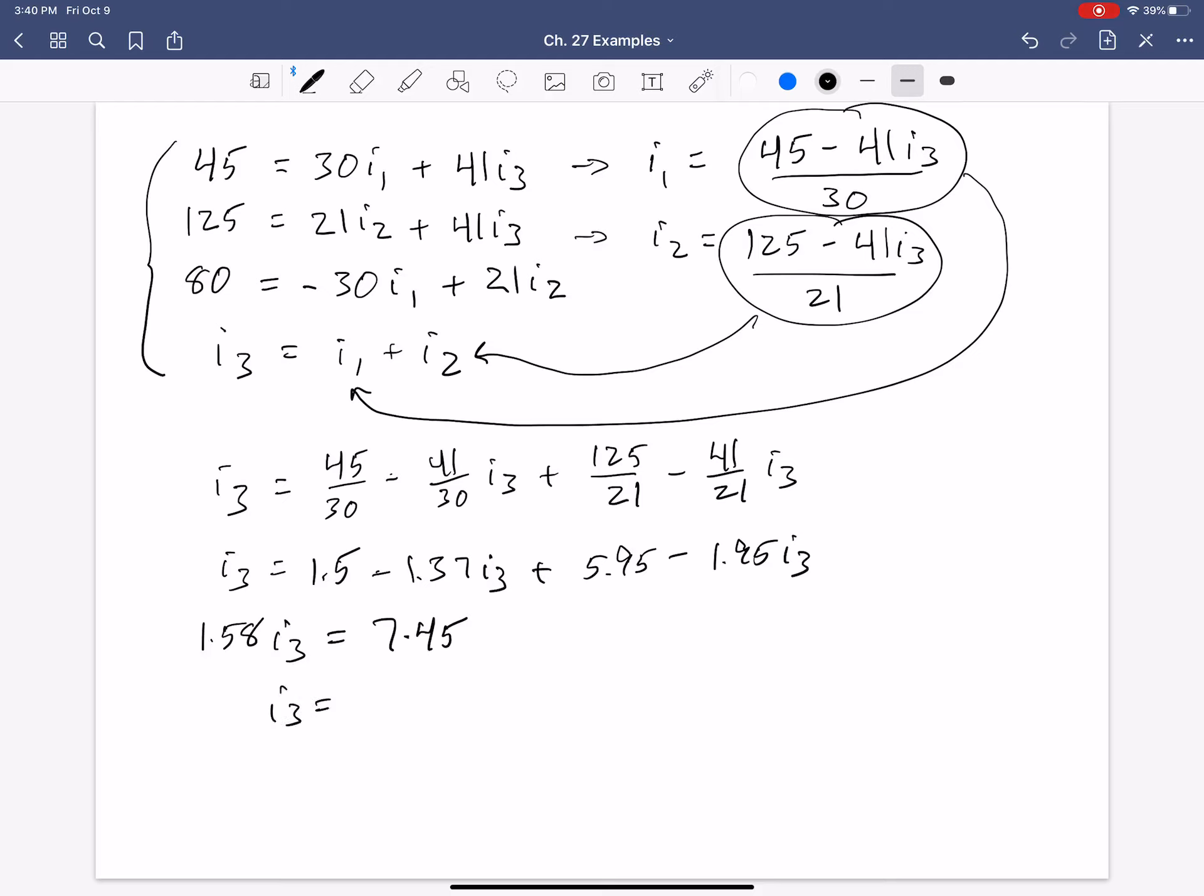So, now, I3, wait a second. 1 plus 1.37 plus 1.95. Oh, there we go. I apologize. That is 4.32. There we go. 4.32 times I3. So, now, that total current is 1.72. There we go. Amps.